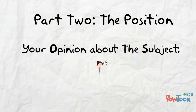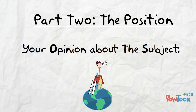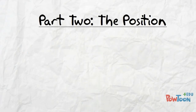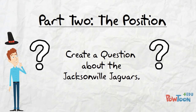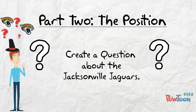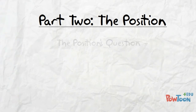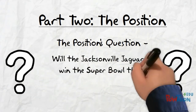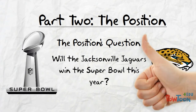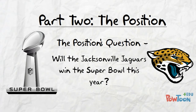This is where you sound your barbaric yelp over the roofs of the world, as Walt Whitman once said. In order to develop part two — the position — it's important to create a question about the subject. So let's put that brainstorming hat back on. What interests you about the Jacksonville Jaguars football team this year? What fascinates you about them? After some brainstorming, let's say you arrive at this question: Will the Jacksonville Jaguars win the Super Bowl this year? Great question. Your answer to that question will develop the position of your thesis — the argument.